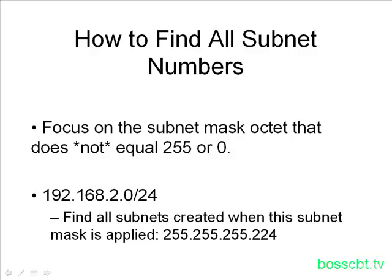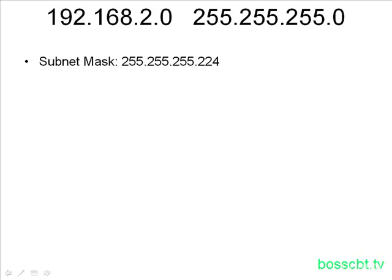Our first challenge is this. Given this 192.168.2.0 class C network, find all of the subnets that are created when this subnet mask is applied. The new subnet mask is going to be a .224, which you know is a slash 27. We have our class C network listed along with its default subnet mask, and then we have our new subnet mask that we're going to use to chop it up.